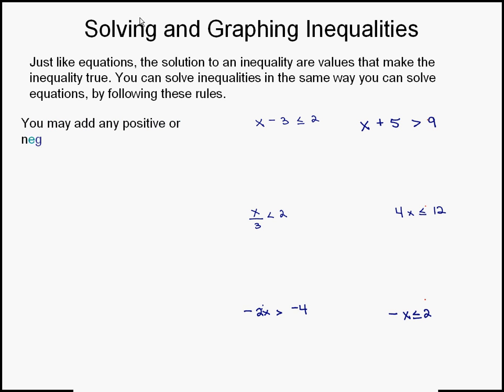First rule: you may add any positive or negative number to both sides of an inequality in order to solve. We're going to look at the first inequality, x minus 3 less than or equal to 2. We're going to add 3 to both sides. Doing that on the left will eliminate the negative 3, leaving only x. 2 plus 3 is 5.